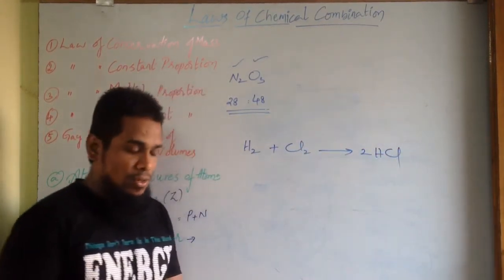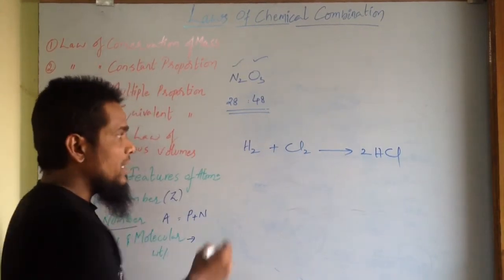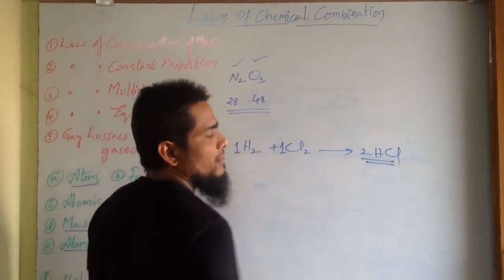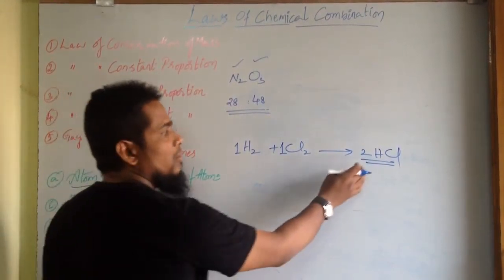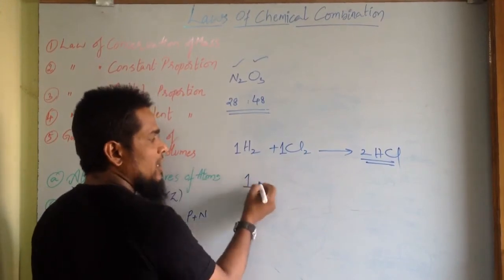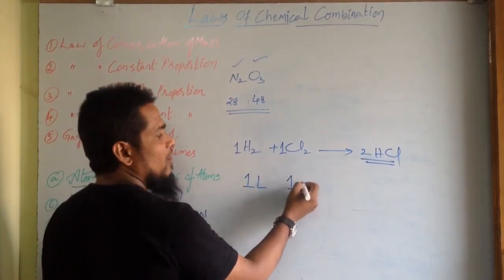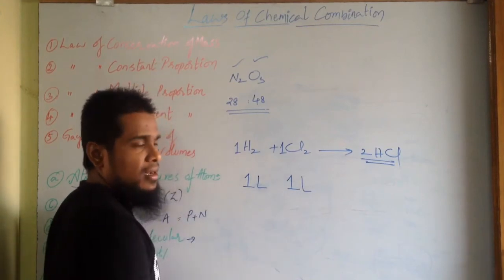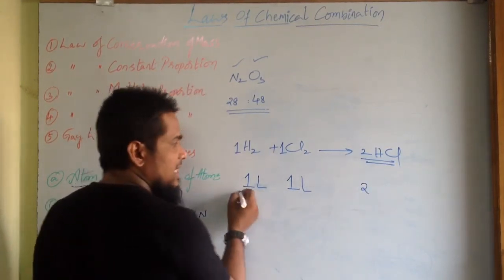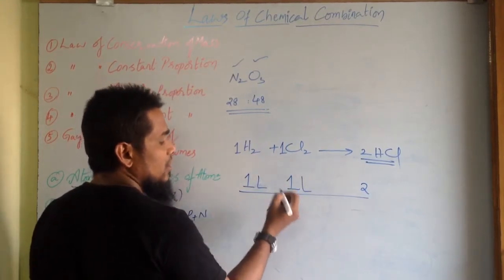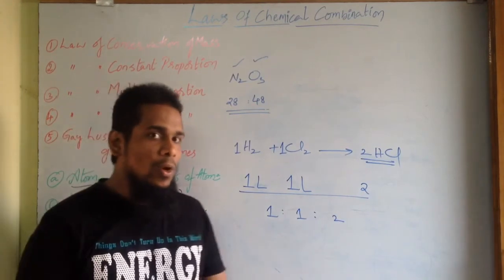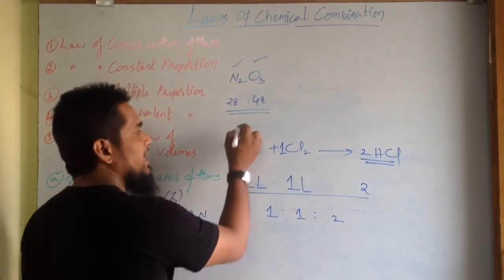For example, hydrogen and chlorine combine in a 1:1 ratio, forming two parts by volume of HCl. That is, one liter of hydrogen combines with one liter of chlorine and forms two liters of HCl. Their ratio is 1 is to 1 is to 2 — a simple whole number ratio.